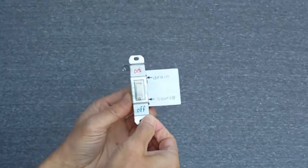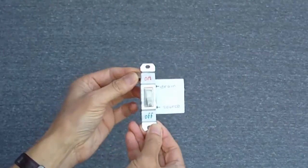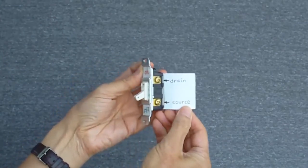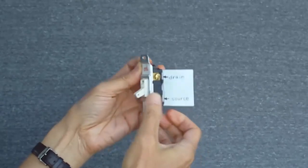The NMOS transistor operates as a switch, much like this household light switch. The terminals of the switch are like the source and drain of the transistor. The control lever is like the gate.